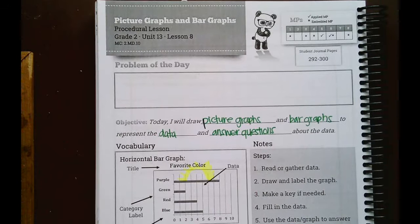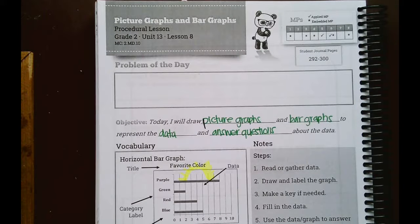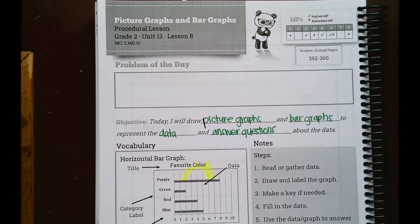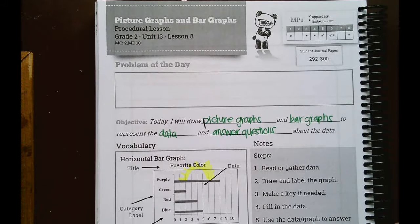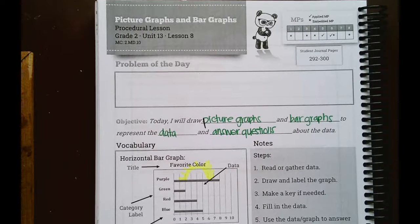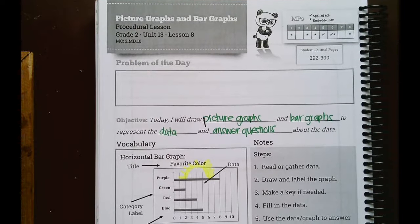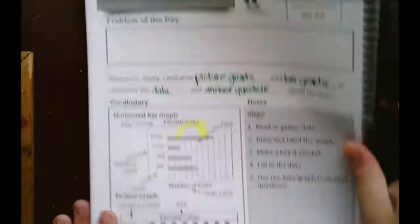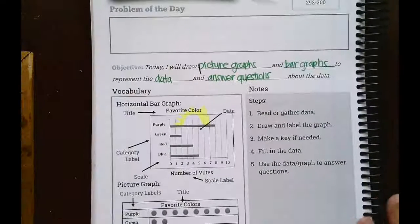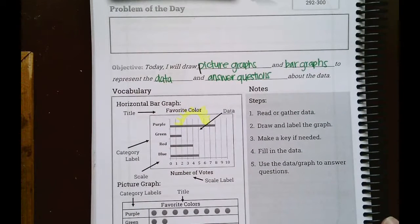Let's get to work on our last math lesson of second grade. We are working on Unit 13, Lesson 8. We will be working on picture graphs and bar graphs today - both of them at the same time. Our objective is: I will draw picture graphs and bar graphs to represent the data and answer questions about the data.